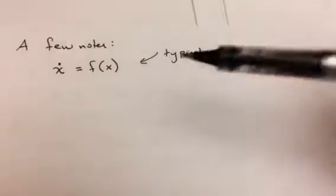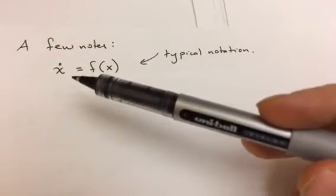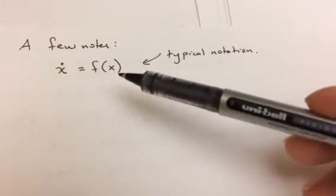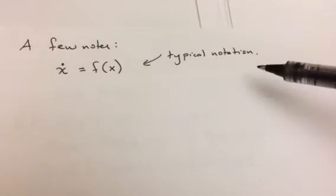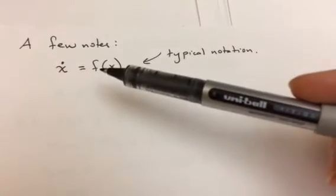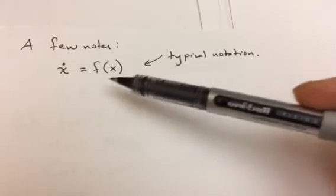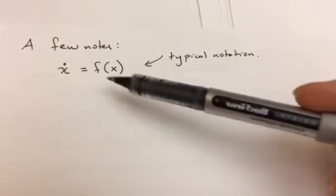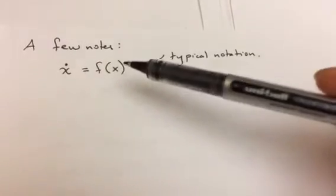The first comment: x dot equals f of x. This is typical notation. What I mean by that is f of x is basically always going to be used for an unknown right-hand side when we're working with a single equation.